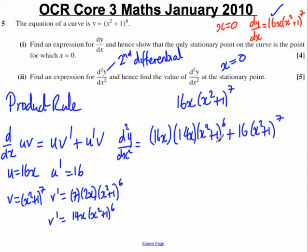Always nice to try and factorise at this stage to make your algebra much easier. Having a look at each, there are two expressions added together, and in each one, there's various items multiplying by each other. What factors go into 16x, 14x, (x² + 1)⁶, and 16(x² + 1)⁷?